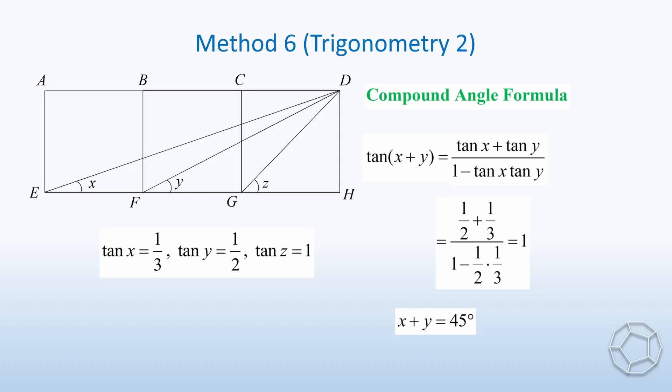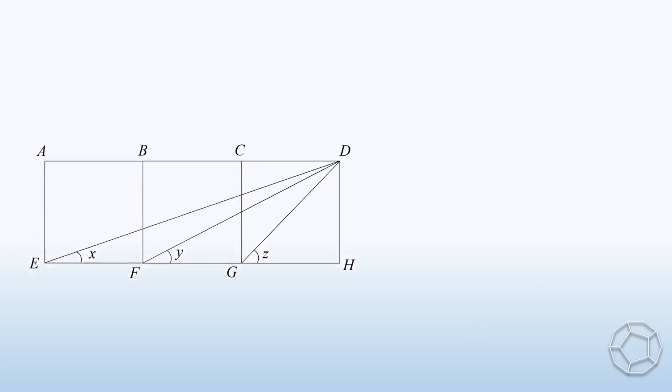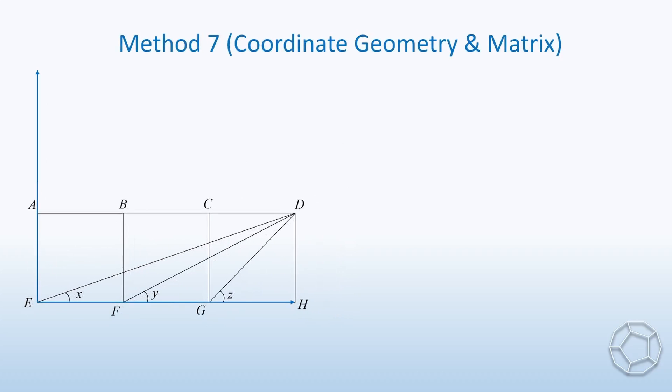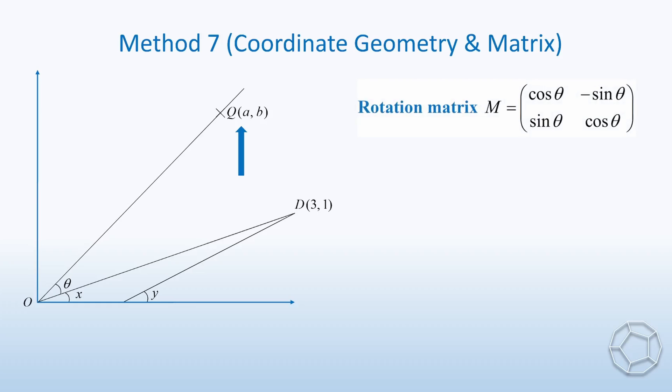Yes, what we are going to look at is quite computational. For method 7, we introduce a rectangular coordinate system such that E is the origin, EH and EA are the positive axes. We also let the coordinates of D be 3, 1. Now, let's rotate the side OD about the origin in the anticlockwise direction by an angle theta. Let the image of D be the point Q with coordinates AB. Recall the rotation matrix M, which is equal to cosine theta, negative sine theta, sine theta, cosine theta. Therefore, the coordinates of image Q can be found by multiplying the rotation matrix and the coordinates of D.